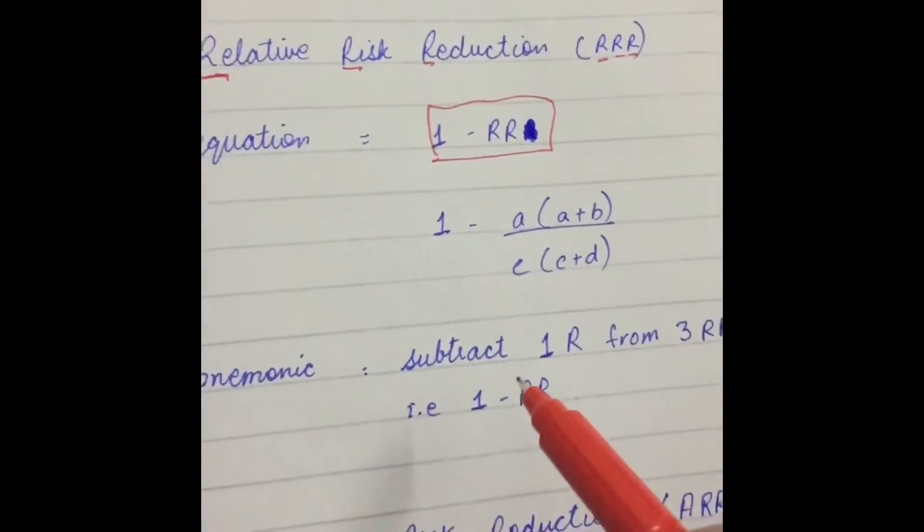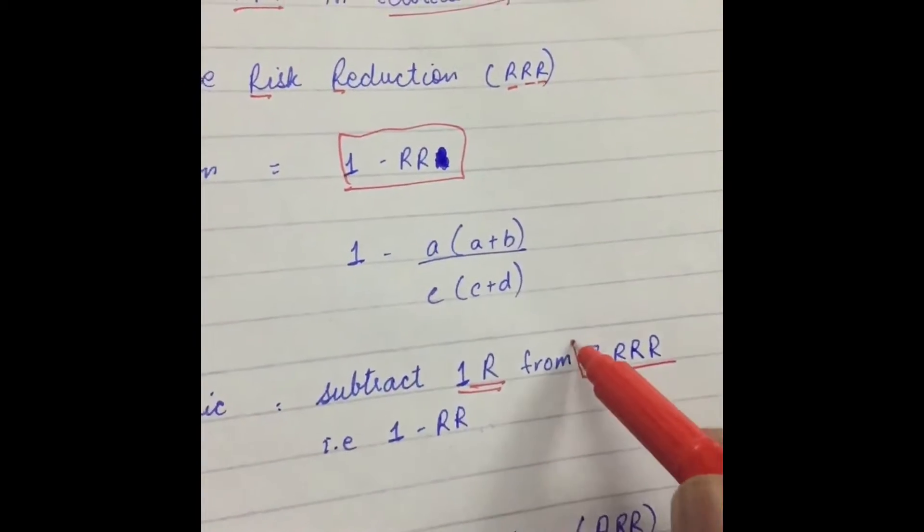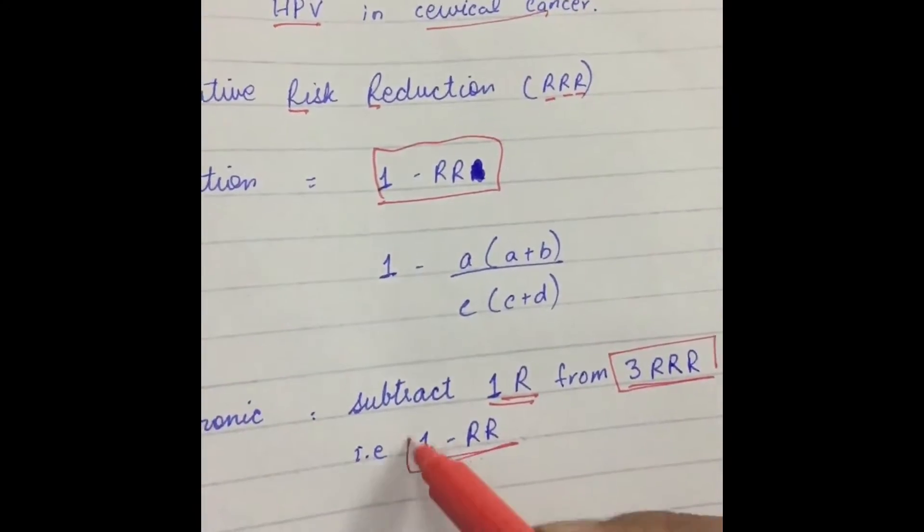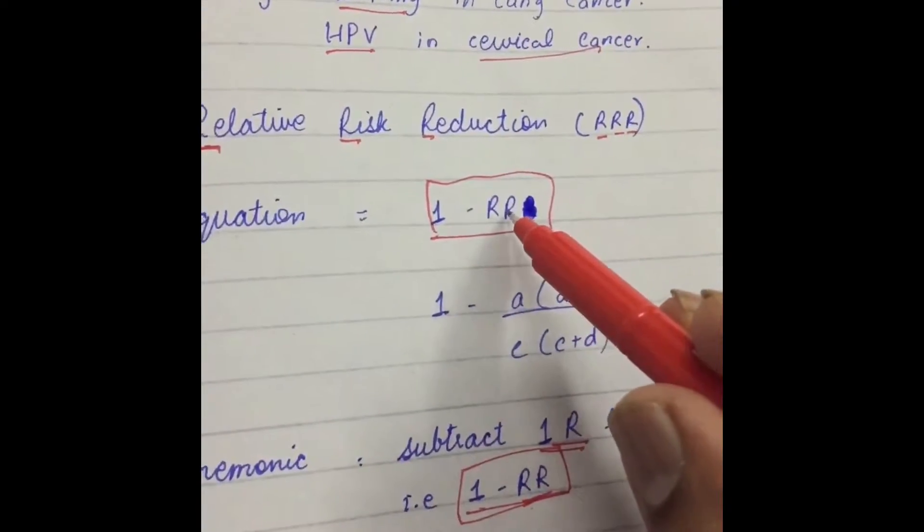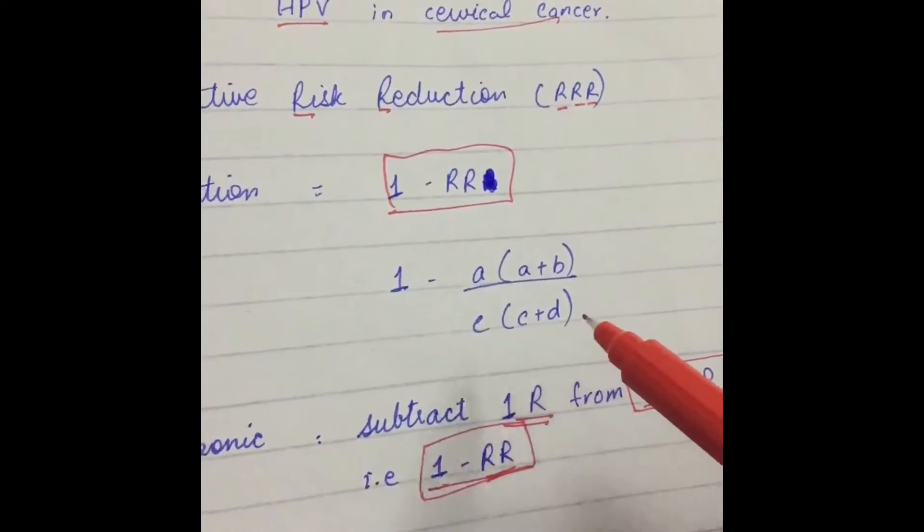Its mnemonic is very simple. You have to subtract 1 R from 3 R's. So, it will just become 1 minus 2 R's. That is Relative Risk, A plus B, C, C plus D.